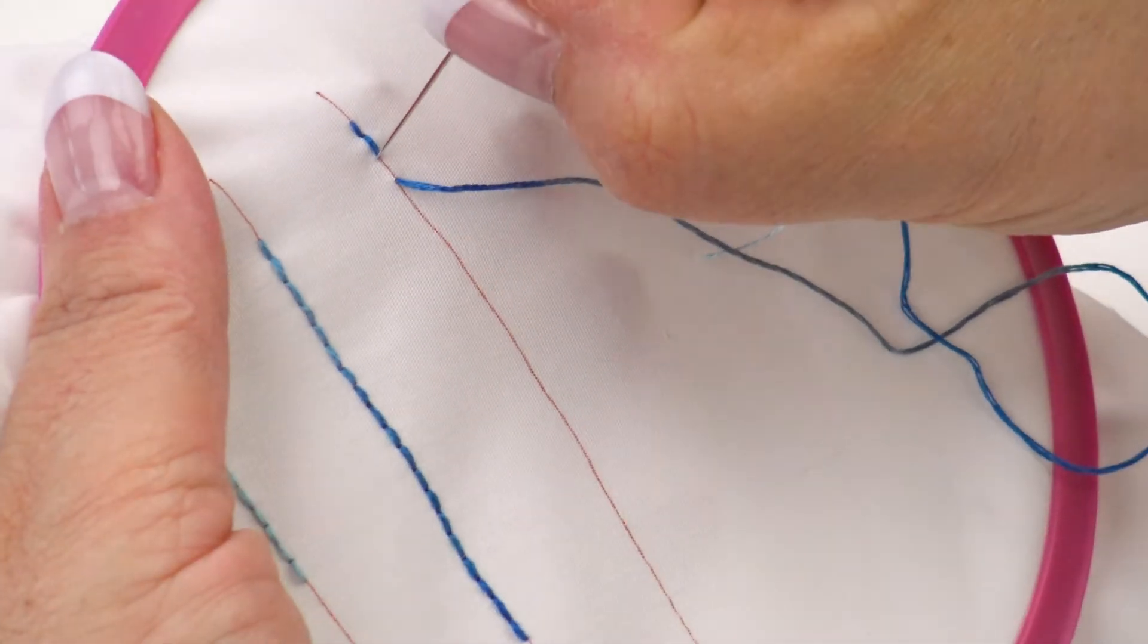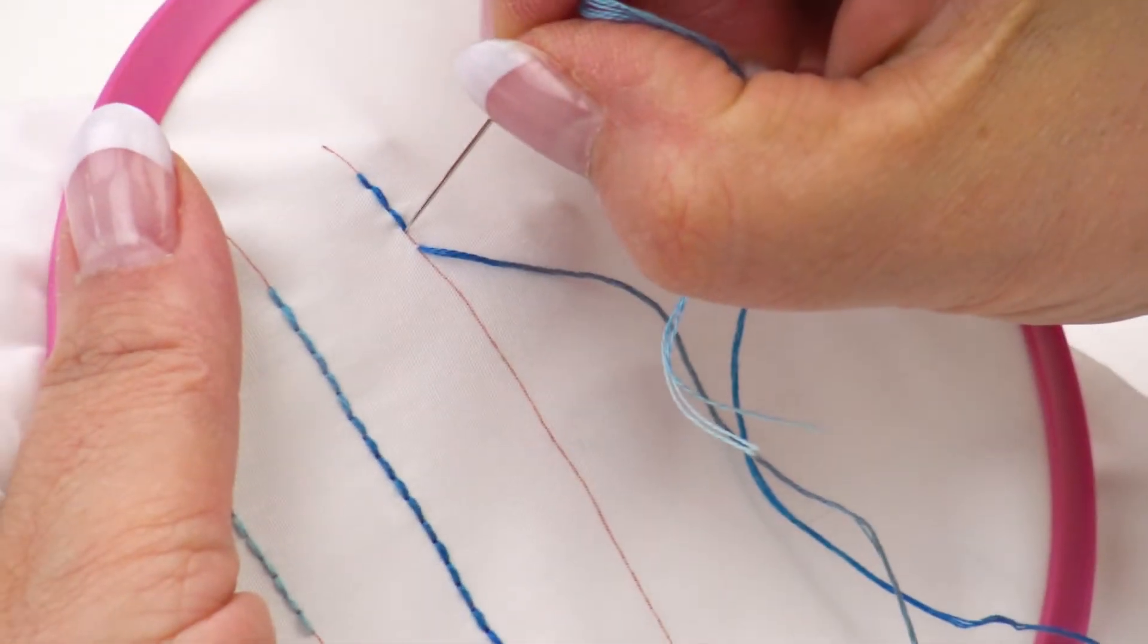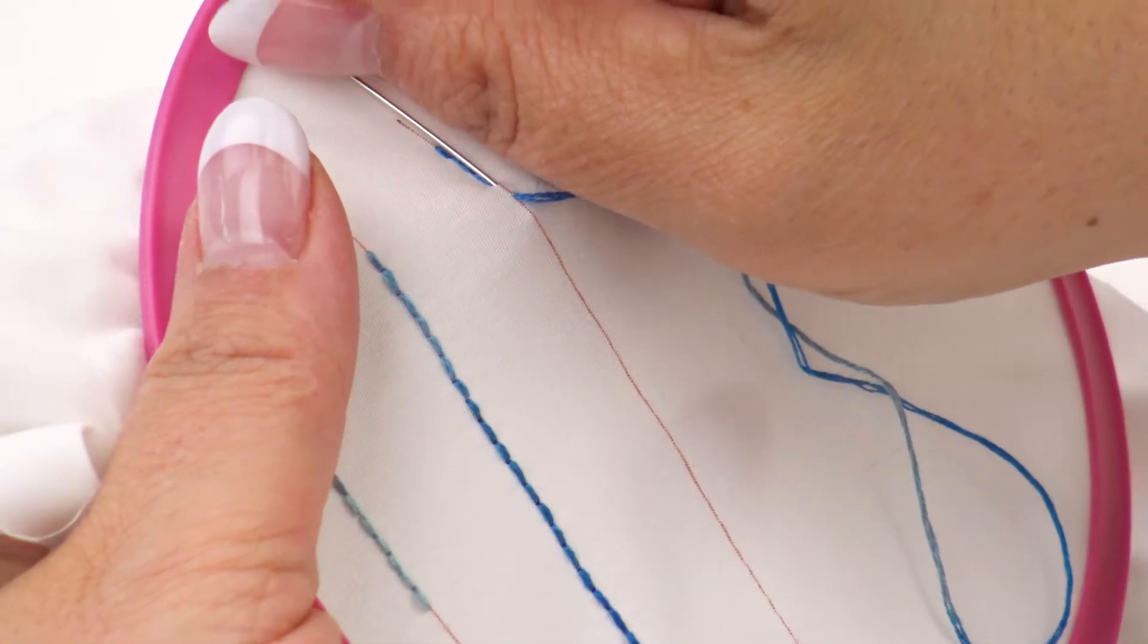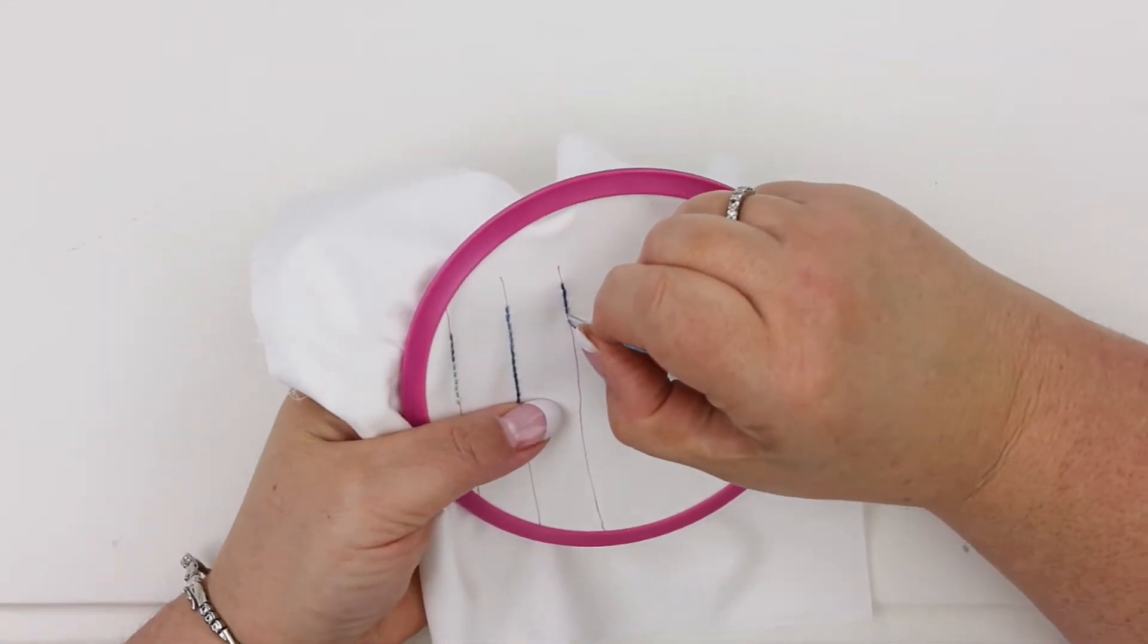Go in the same hole and rock back farther up on the line. You just get that rocking motion going, which I loosened my fabric up too much in the hoop. You'll know right away when you've done it.